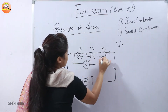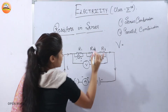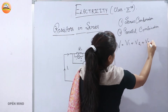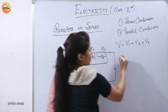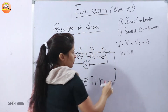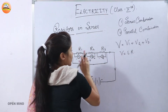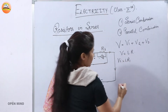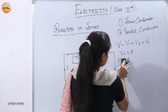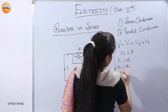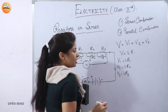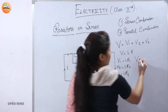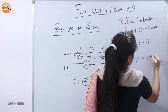So, calling the individual voltages V1, V2, and V3, we have: V = V1 + V2 + V3. Now, according to Ohm's law, V = IR. Since the current through each resistor remains the same, V1 = I·R1, V2 = I·R2, and V3 = I·R3. The total potential difference across the two ends of the circuit equals V1 + V2 + V3.